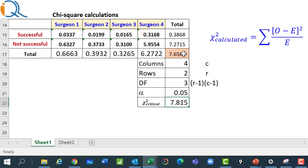Now, here the calculated value is 7.65 while as critical value is 7.8. So, we cannot reject null hypothesis because the calculated value is smaller than the critical value.